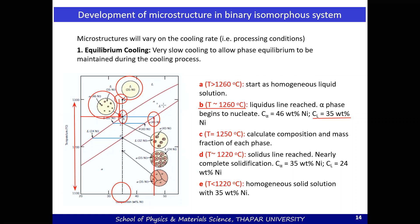This is mentioned both on the phase diagram and in the statement. At point B, you have two phases: liquid with 35 weight percent nickel (rest copper), and alpha solid with 46 weight percent nickel (rest copper).